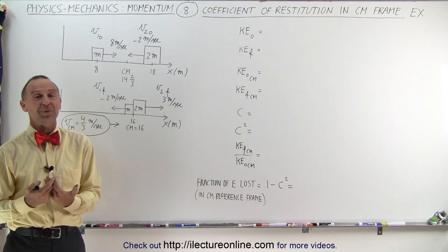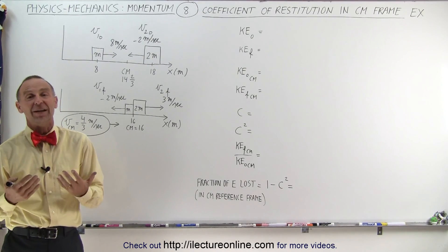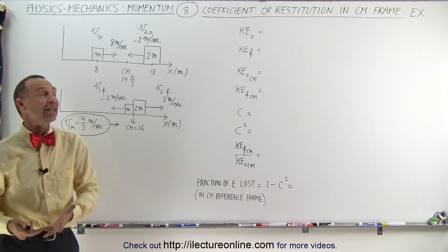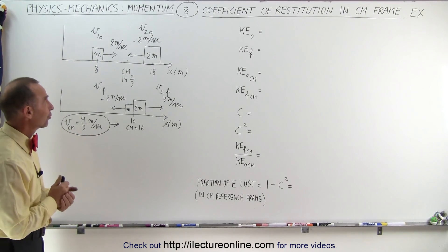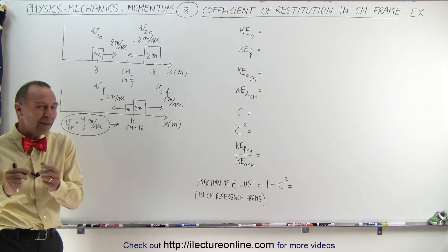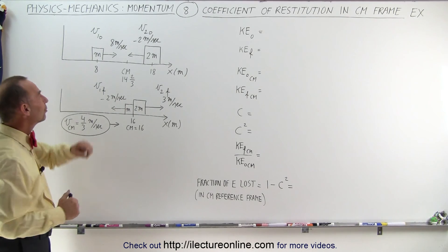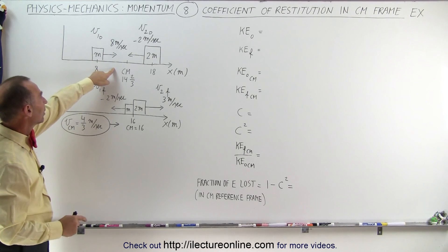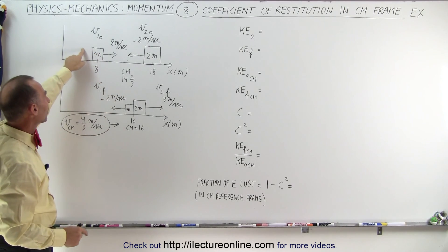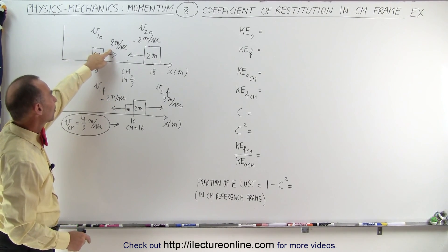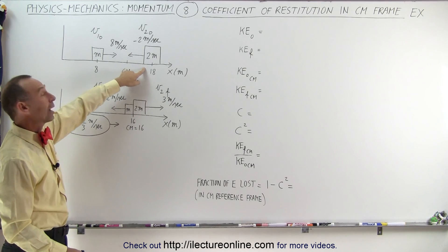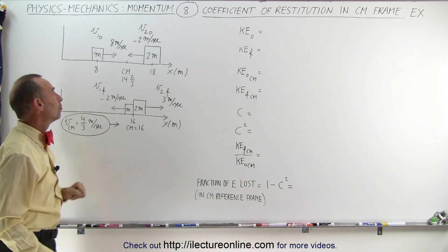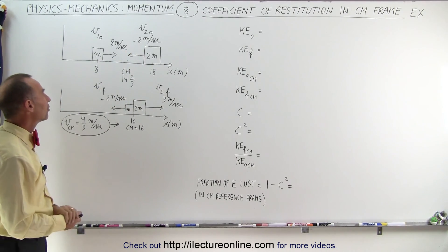Here's a good example to help us solidify our understanding of the coefficient of restitution. We have two objects of different masses approaching one another — the one on the left with mass m at 8 meters per second to the right, and the one on the right with mass 2m moving to the left at minus 2 meters per second.